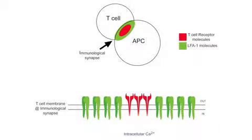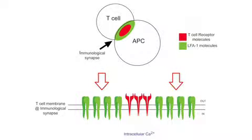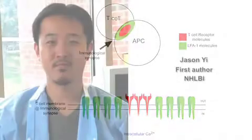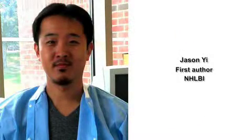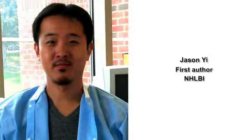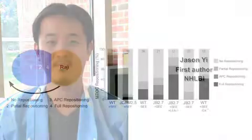Previous studies had suggested that signaling by the T cell receptor is sufficient to recruit centrosomes to the immunological synapse, and that integrin and calcium-based signaling are not required for centrosome repositioning. Hammer and colleagues, led by Jason Yee, tested this idea by comparing centrosome recruitment in various T cell lines under different conditions.